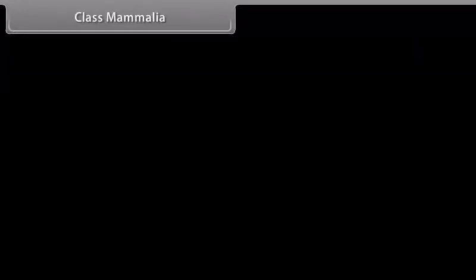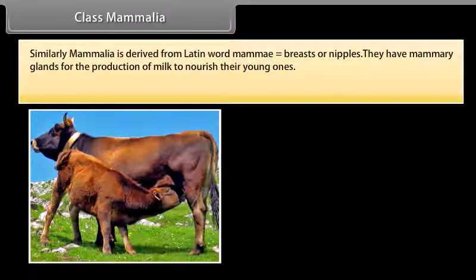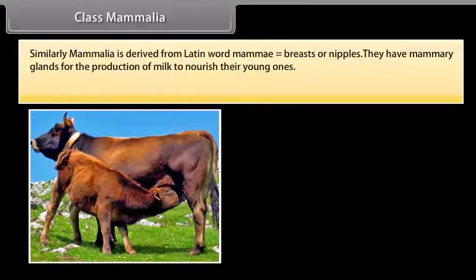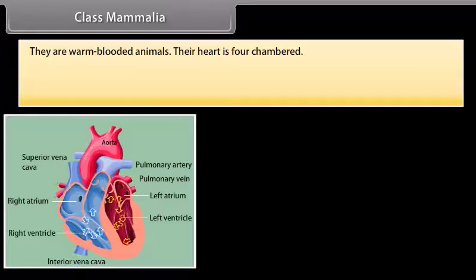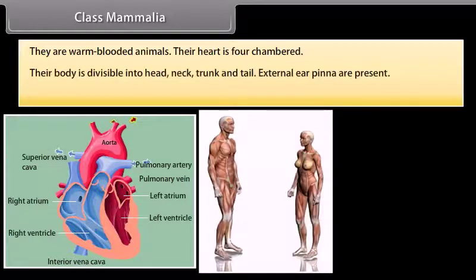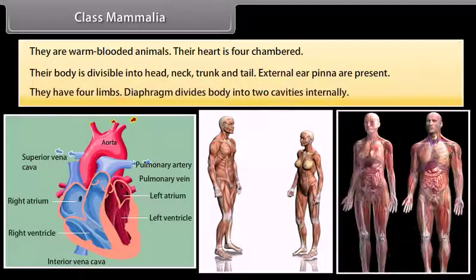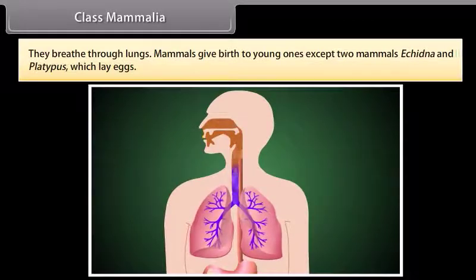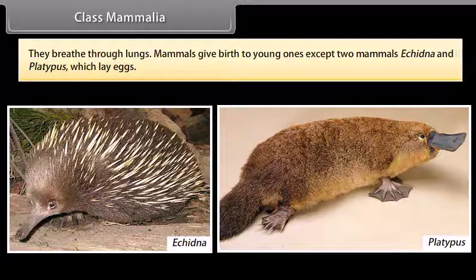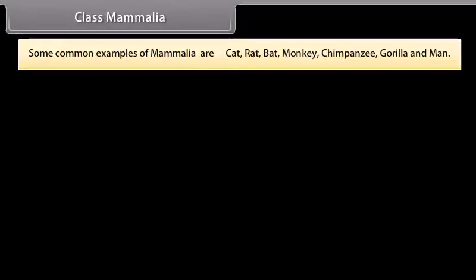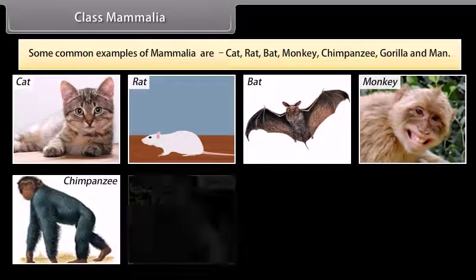Class Mammalia. Mammalia is derived from Latin word mamma, meaning breasts or nipples. They have mammary glands for the production of milk to nourish their young ones. Their skin has hairs and sweat and oil glands. They are warm-blooded animals. Their heart is four-chambered. Their body is divisible into head, neck, trunk, and tail. External ears (pinna) are present. They have four limbs. A diaphragm divides the body into two cavities internally. They breathe through lungs. Mammals give birth to young ones, except Echidna and platypus which lay eggs. Some common examples are cat, rat, bat, monkey, chimpanzee, gorilla, and man.